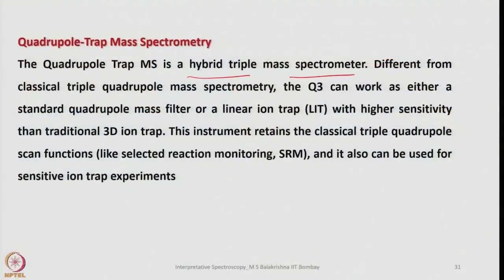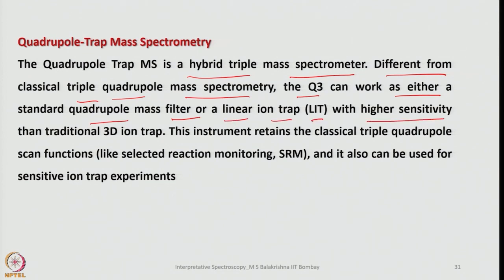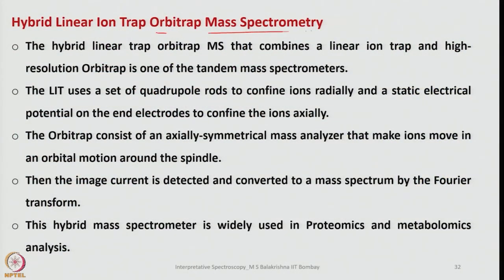The quadrupole ion trap mass spectrometry is a hybrid triple mass spectrometer different from classical triple quadrupole mass spectrometry. The Q3 can work as either a standard quadrupole mass filter or a linear ion trap (LIT) with higher sensitivity than the traditional 3D ion trap. This instrument retains the classical triple quadrupole scan functions and can also be used for sensitive ion trap experiments.